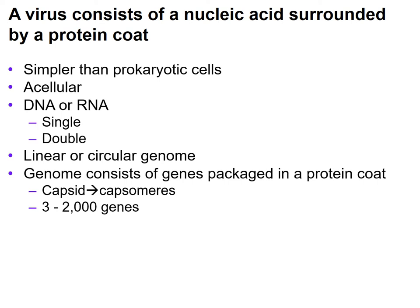The genome is very small in some cases — extremely small — and consists mainly of the genes packaged in a protein coat. The DNA or RNA is packaged up in this protein coat, and the protein coat is made up of capsids, which are made up of capsomeres that surround the nucleic acid genome. A virus can consist of as little as three genes to as many as 2,000 genes, so the genome size varies quite significantly.